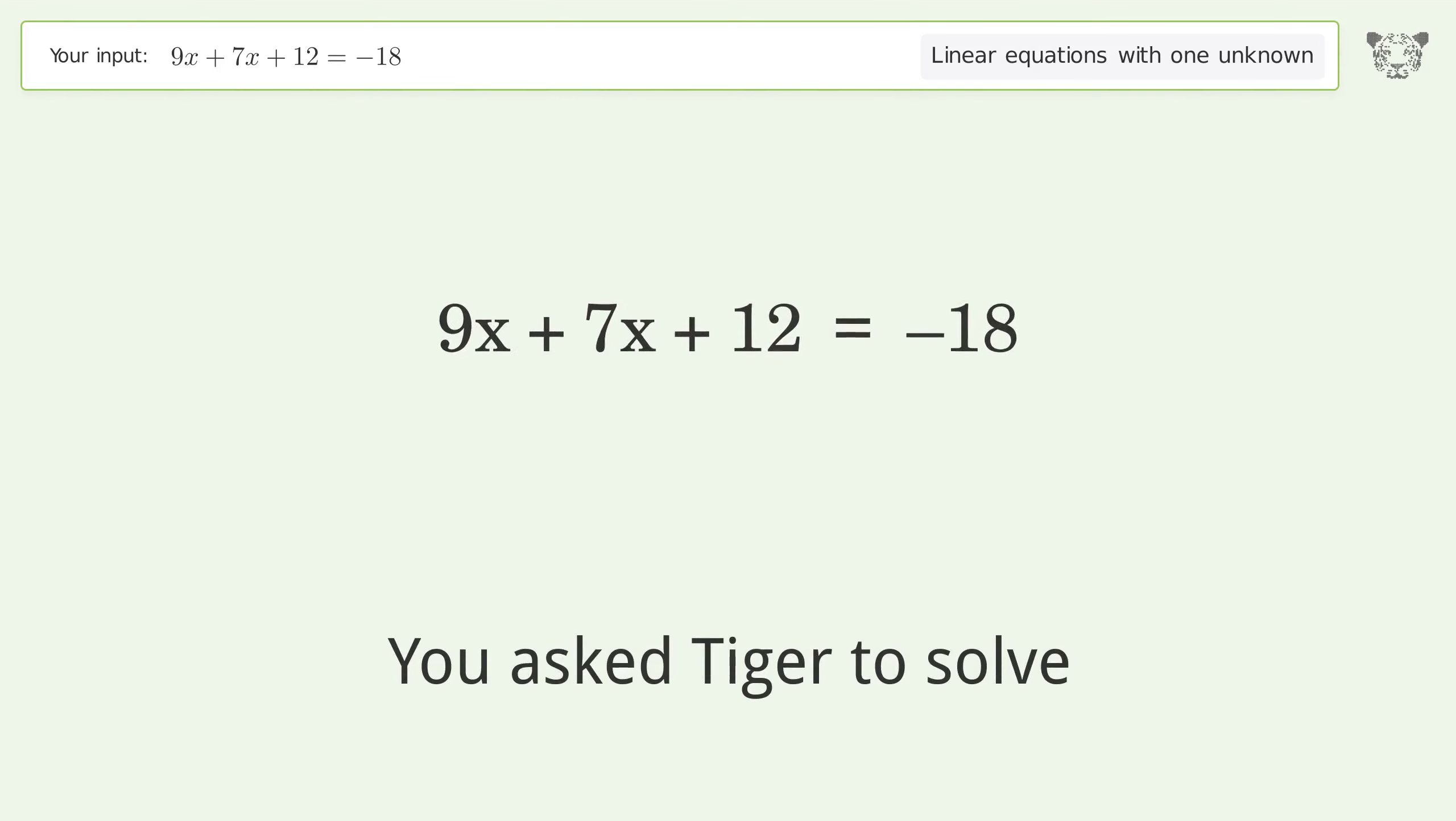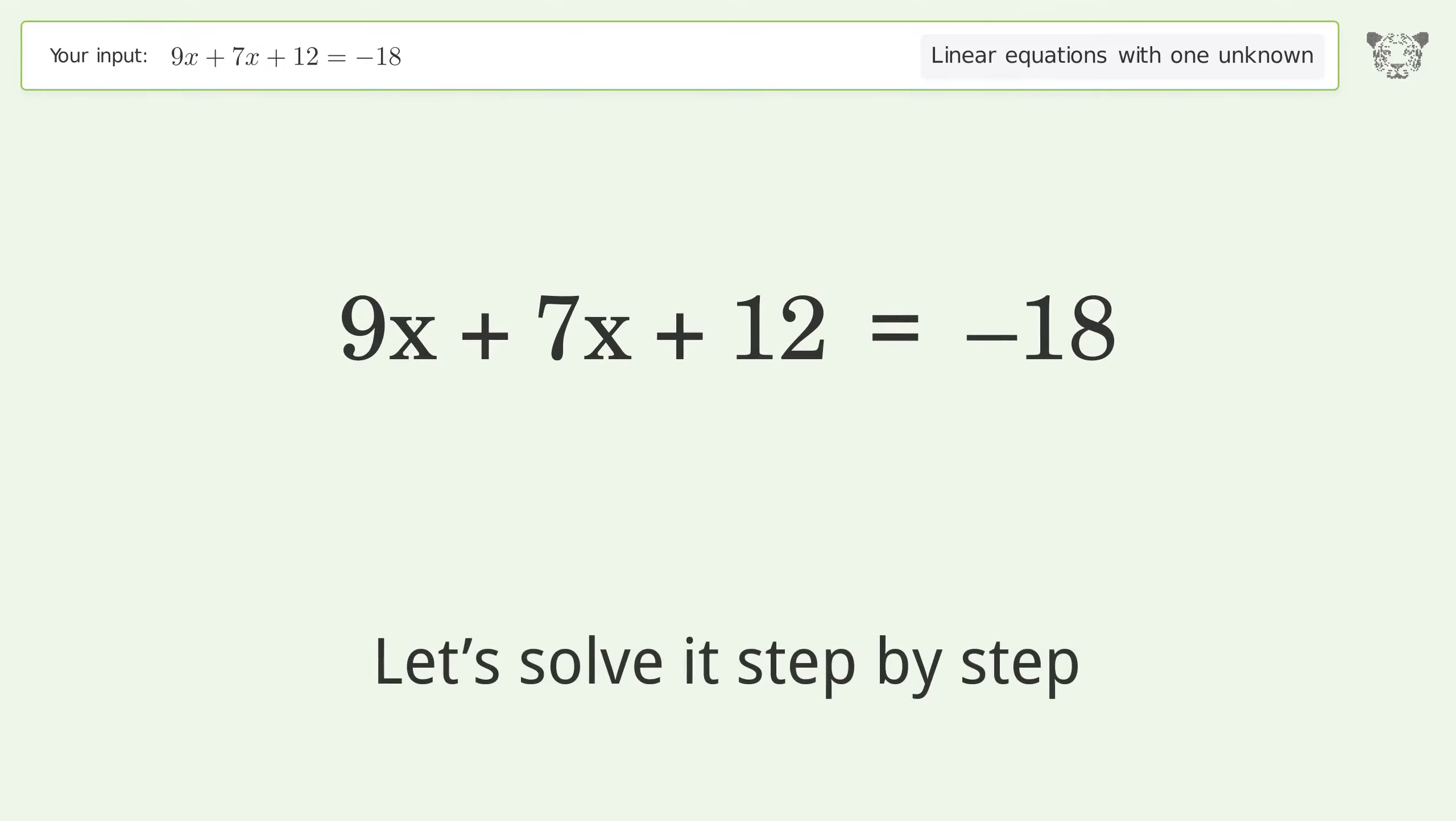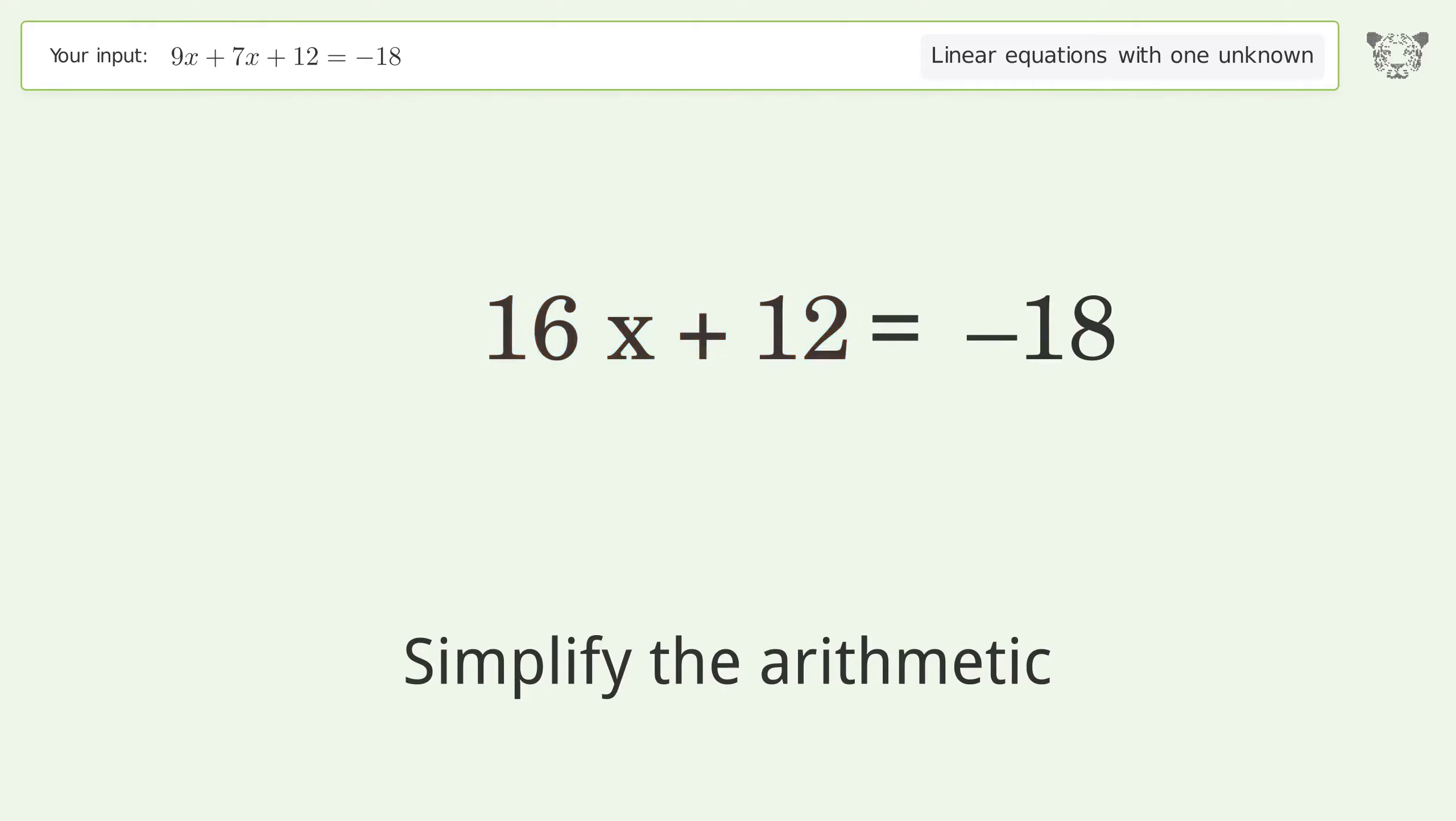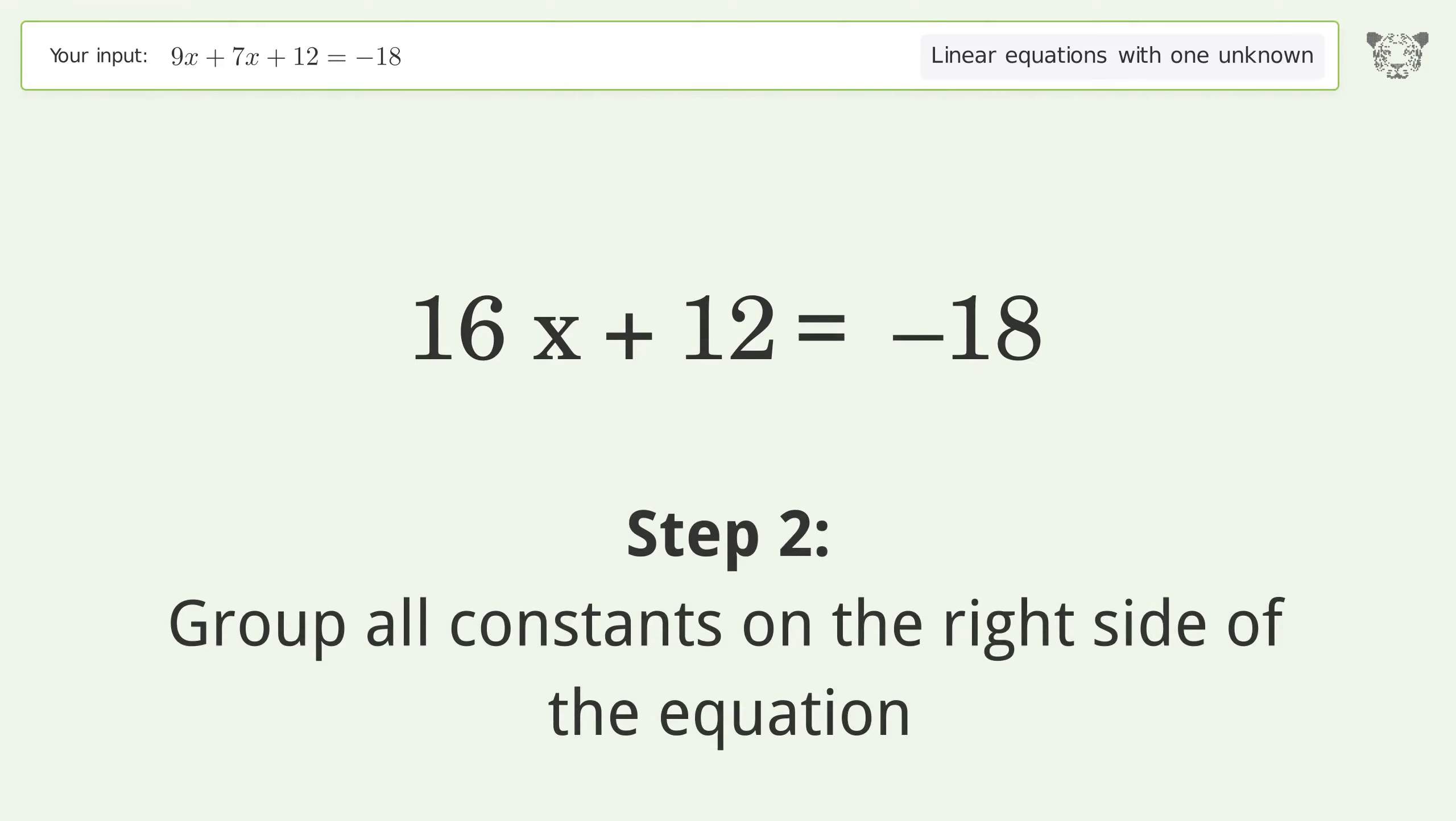You ask Tiger to solve this problem which deals with linear equations with one unknown. The final result is x equals negative 15 over 8. Let's solve it step by step. Simplify the expression, simplify the arithmetic, and group all constants on the right side of the equation.